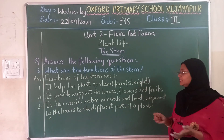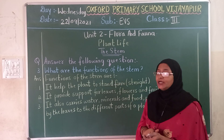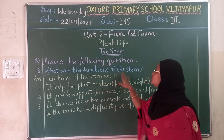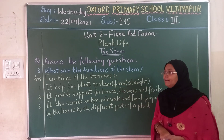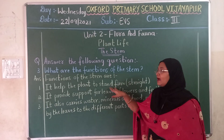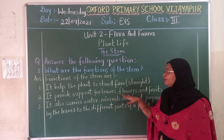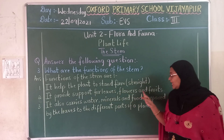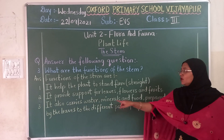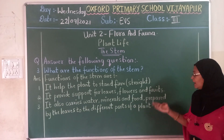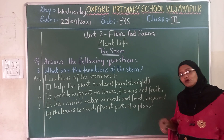Understand? Not body — plant. So once again we will read the question and answer. What are the functions of the stem? Answer: functions of the stem are — it helps the plant to stand firm and straight; it provides support for leaves, flowers and fruits; it also carries water, minerals and food prepared by the leaves to the different parts of the plant. So this is your third question and answer.